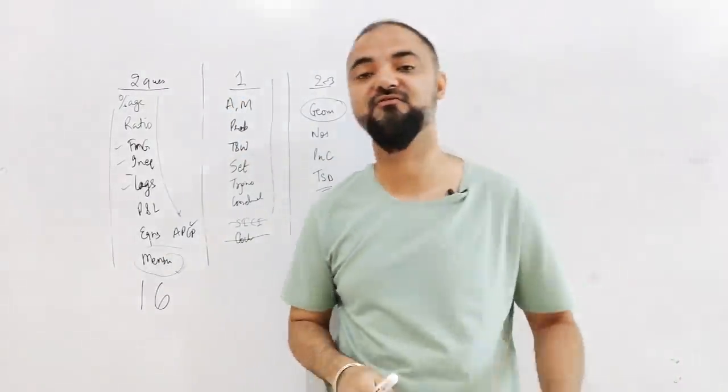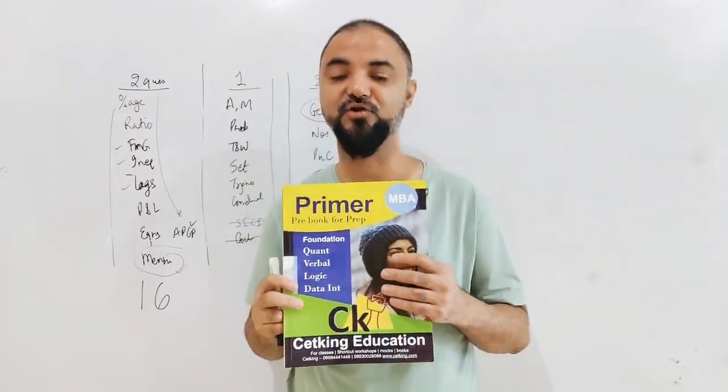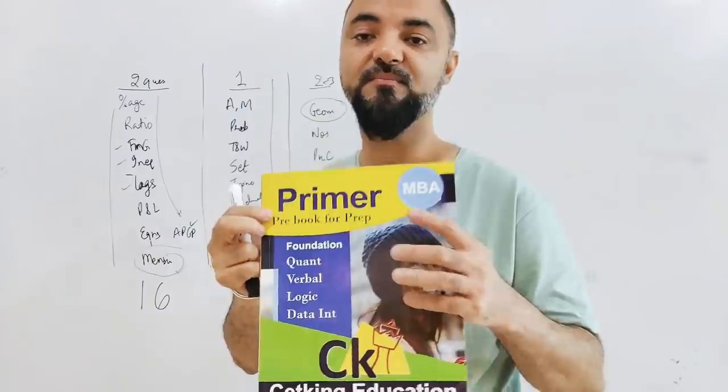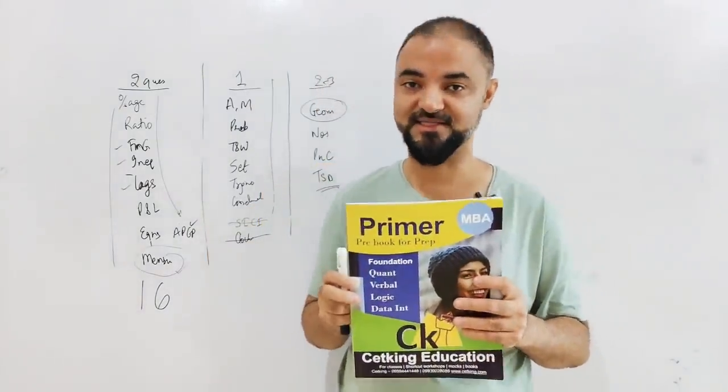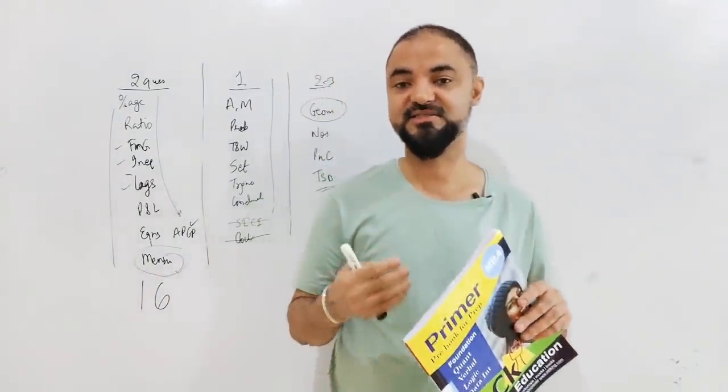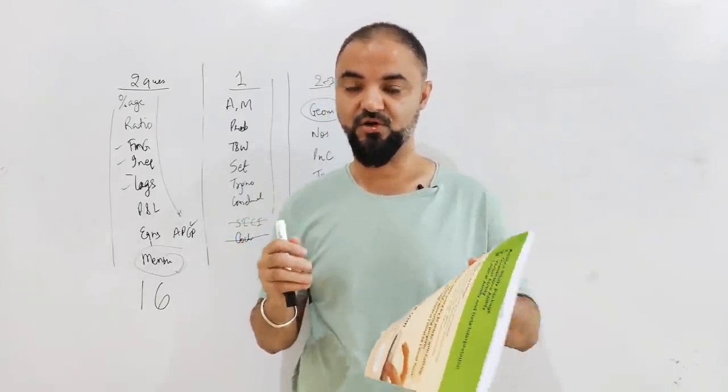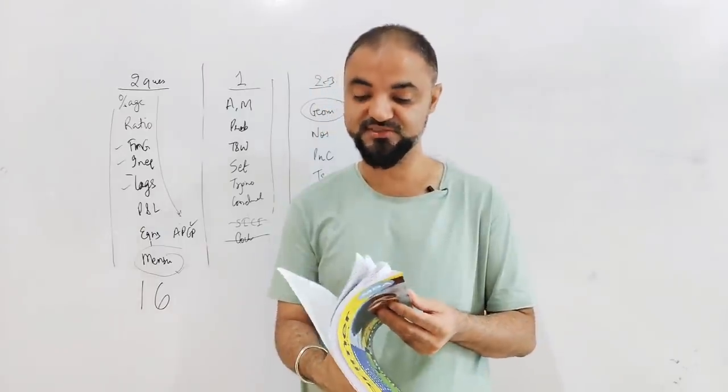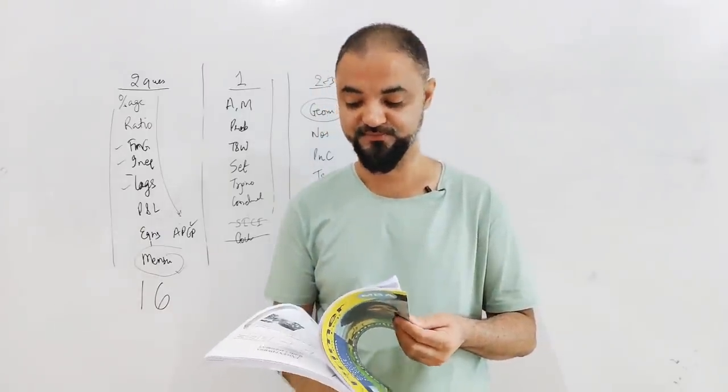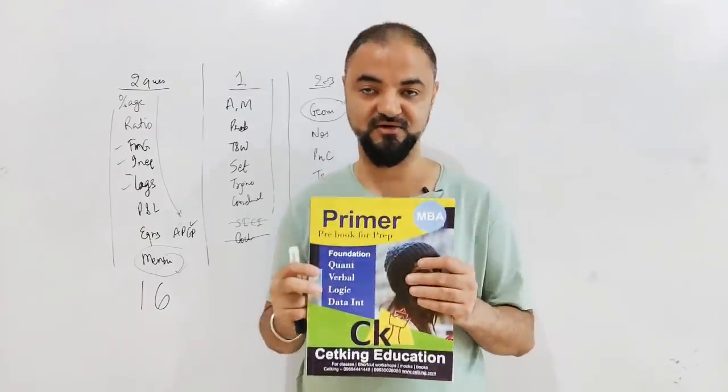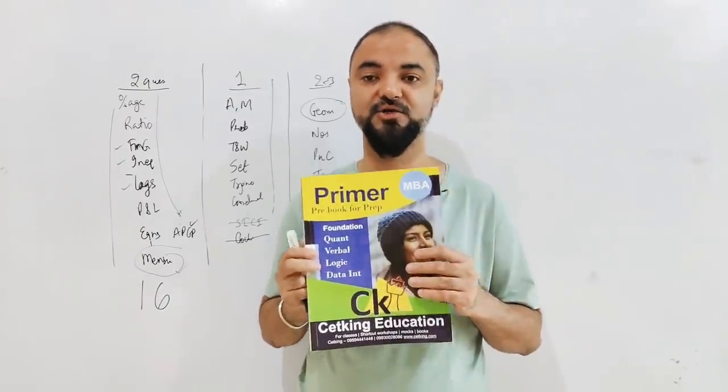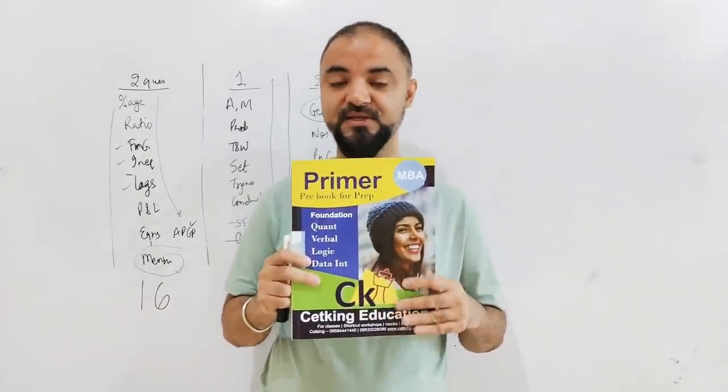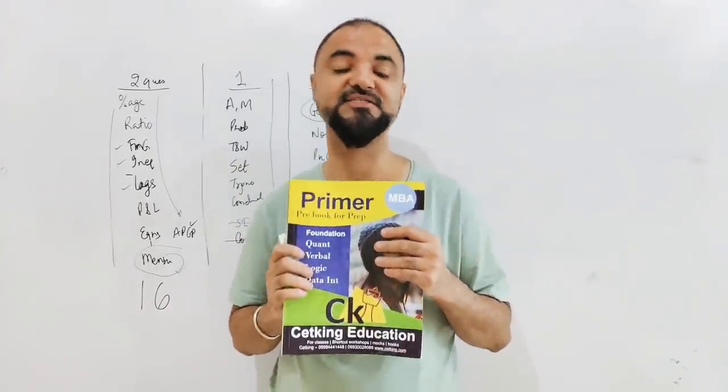For those starting now for CAT this year, it will be a little late, but for next year we're launching this primer book. This primer book is pre-book - basically school concepts. I went back to class 7, 8, 9, 10 and picked up the pages or topics which are coming from class 7, 8, 9, 10 which are important for us. Obviously there are topics which we don't want to use, but all the important topics are covered here. This is going to be our target to complete. For those going for CAT next year, you can pre-book this book so that you can get it at home and start the preparation with this.